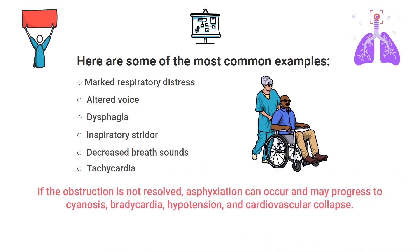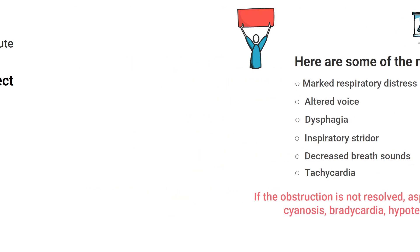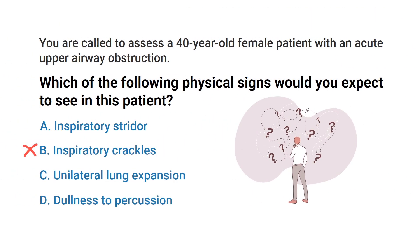Upper airway obstructions can be very serious in adult patients because if the obstruction is not resolved, asphyxiation can occur and may progress to cyanosis, bradycardia, hypotension, and cardiovascular collapse. None of the other answer choices are likely to occur with an upper airway obstruction, which tells us that the correct answer is A) inspiratory stridor.